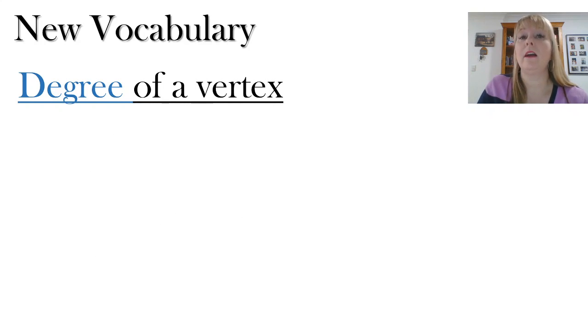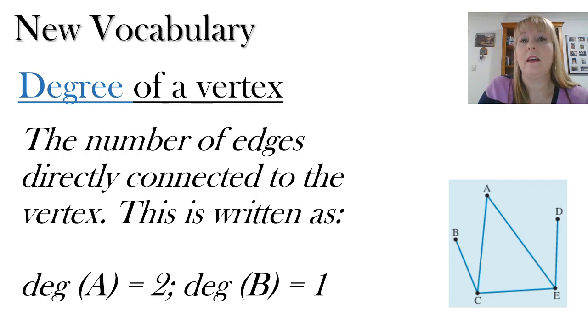Now we have something in our vocabulary called the degree of a vertex. And this is something important that you need to learn. The number of edges that directly connect that vertex is the degree of the vertex. So for example, in this particular diagram on the right hand side, point A, that particular vertex, has a degree of two, because there are two edges coming out from it, an edge going to C and an edge going to E. If you look at point E, the degree of E is three, because it's got three edges coming out of it, one to D, one to A and one to C. And the way we write the degree of the vertex is with the abbreviated form DEG brackets A equals two.